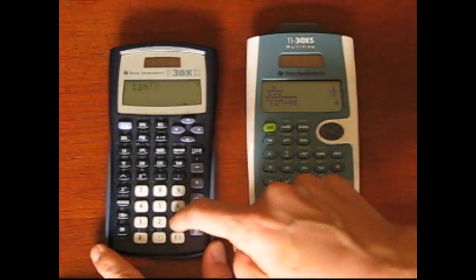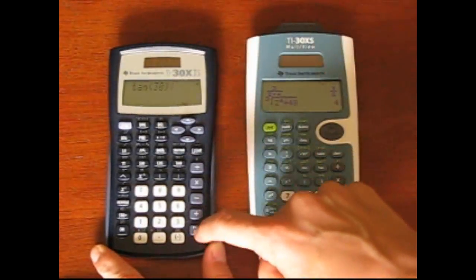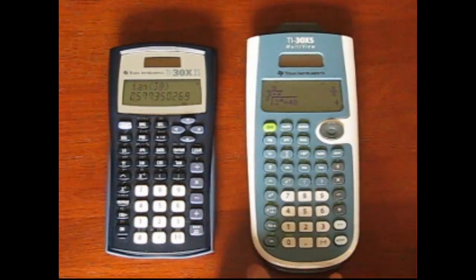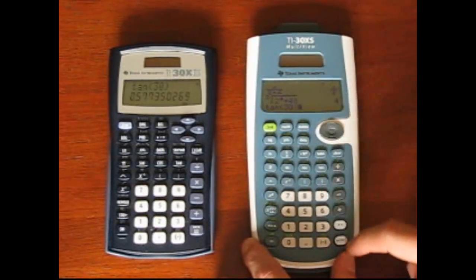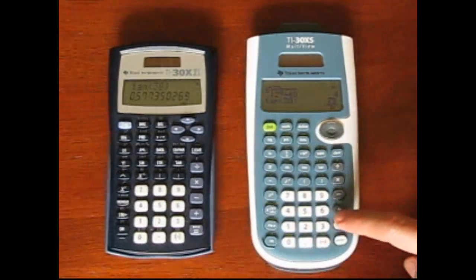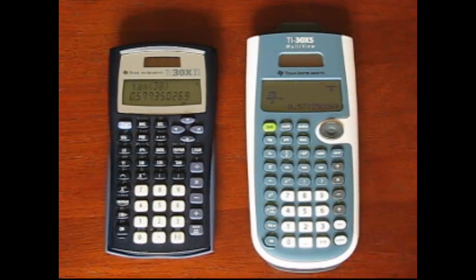Another big advantage is the Multiview's trig features. Special trig values such as the tangent of 30 have answers involving square roots. The X2S will only give you the option of having those answers as a decimal. Often in math class, the square root answer is more important, and with the Multiview, you can see it either way.